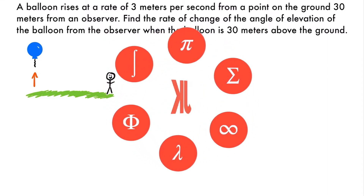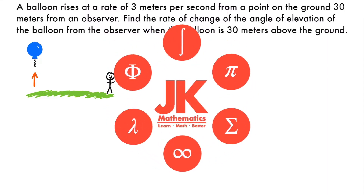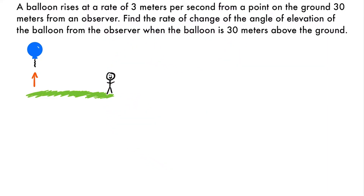Here we have a related rates problem that deals with an angle of elevation. The problem says a balloon rises at a rate of 3 meters per second from a point on the ground 30 meters from an observer. Find the rate of change of the angle of elevation of the balloon from the observer when the balloon is 30 meters above the ground.